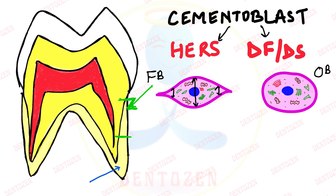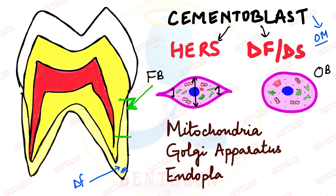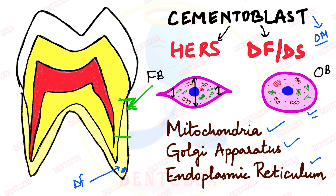The cementoblast has to form a lot of organic matrix — that is, protein — so it is a synthetic cell with many organelles: numerous mitochondria, well-developed Golgi apparatus, and endoplasmic reticulum, as you can see in the diagrams. So we now know about the cementoblast: when it forms during root formation, its two sources, and how it appears.